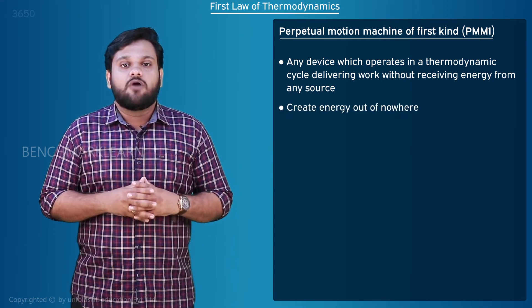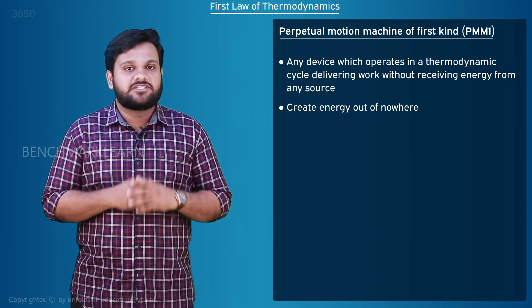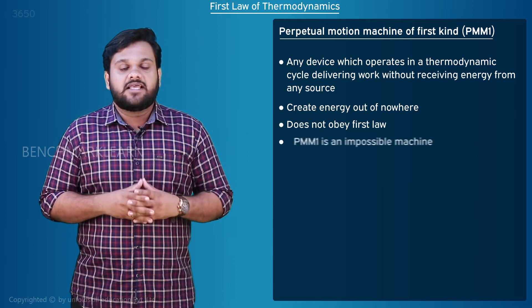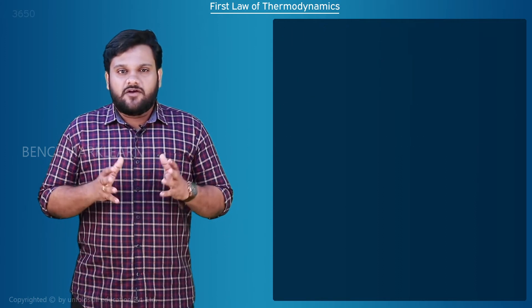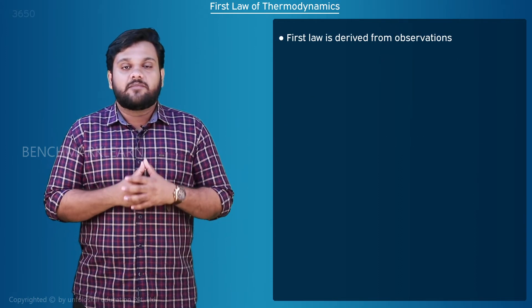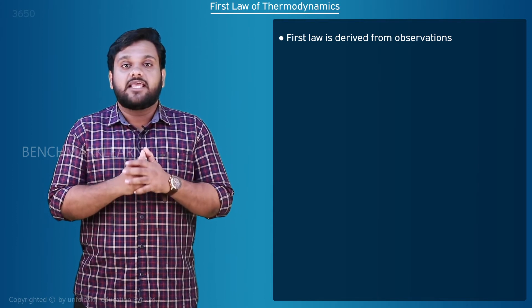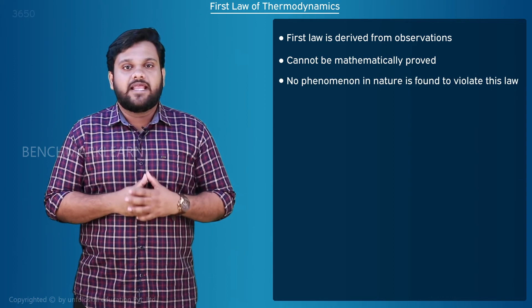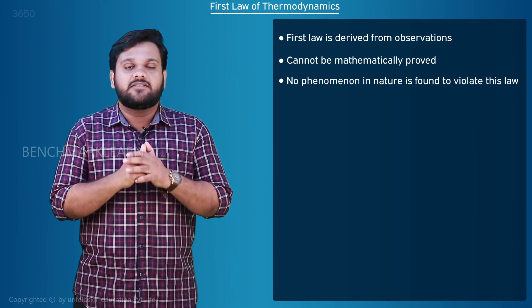It creates energy out of nowhere. This machine does not obey the first law, so such a machine is impossible. The first law is derived from observations and hence cannot be mathematically proved, but no phenomenon in nature is found to violate this law.